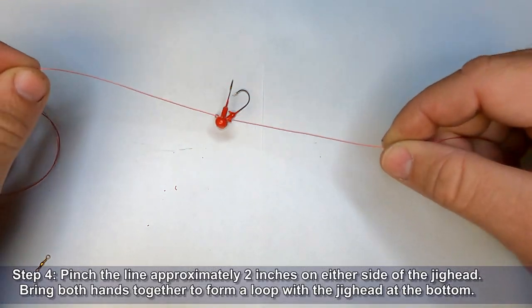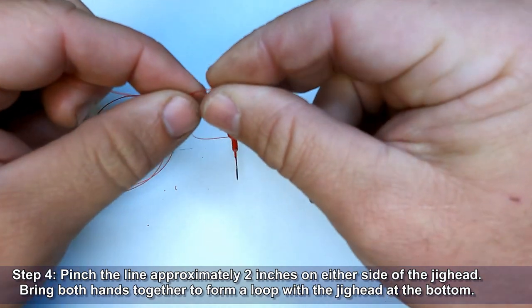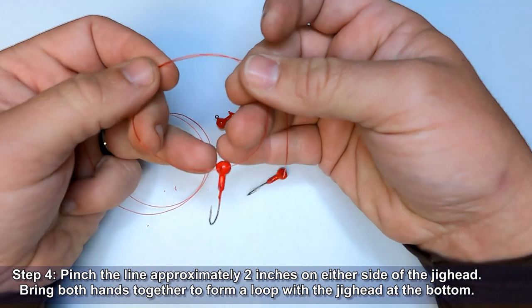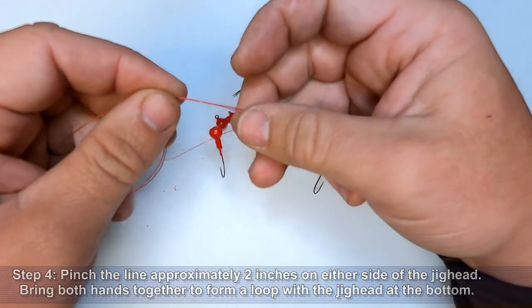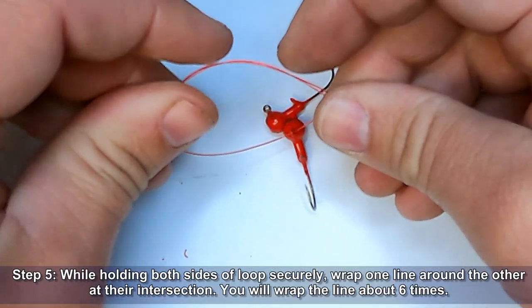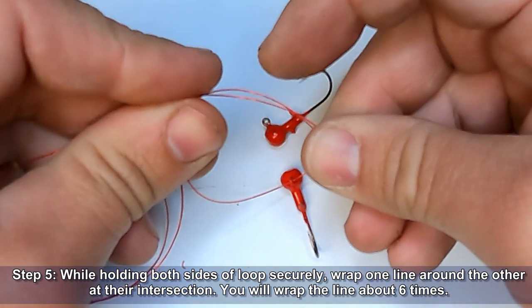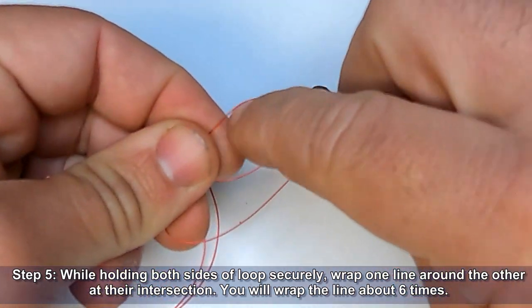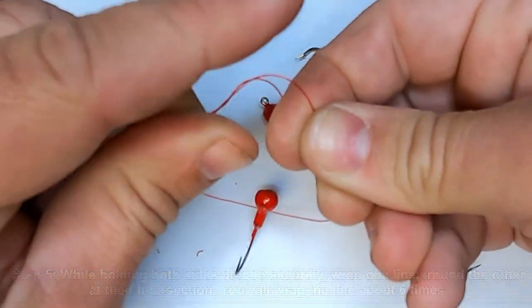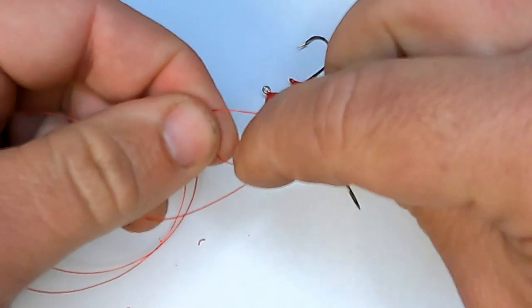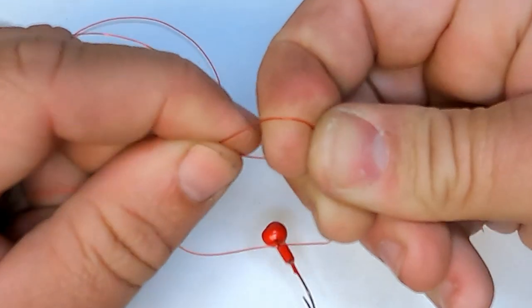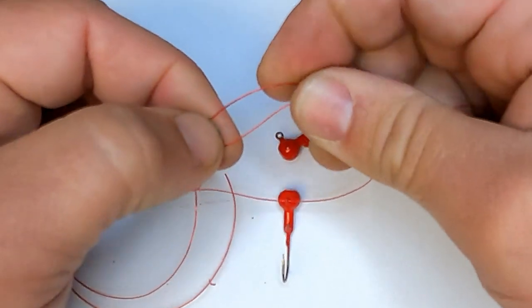So what we're going to do is hold these two lines, bring them together and create a loop. We're going to go about probably a two inch diameter loop here. Now we'll hold both ends, pinch them and where the lines cross, you're just going to reach through and start rotating the lines over each other. And do that about six turns.